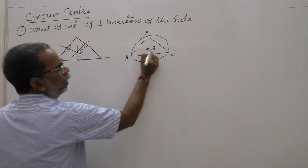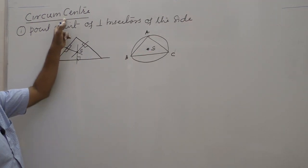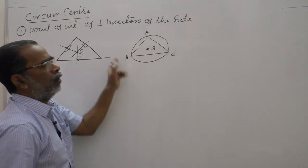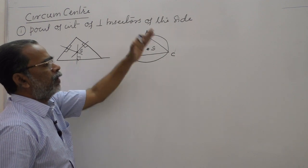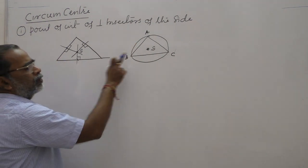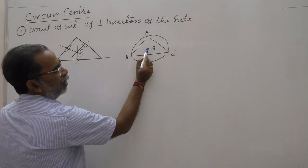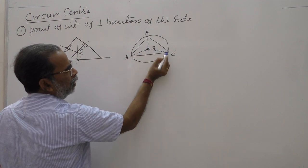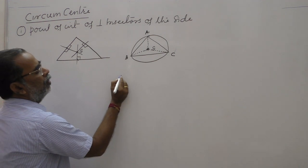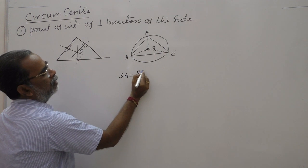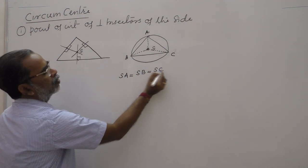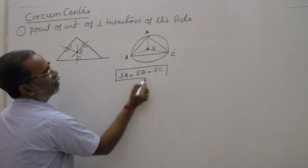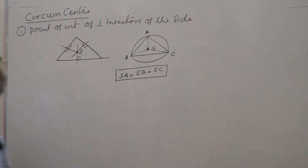Since the circumcenter is the center of the circumcircle, it is equidistant from the three vertices. Therefore: SA = SB = SC. This is a key property of the circumcenter.